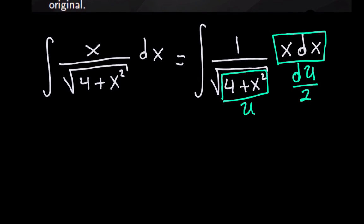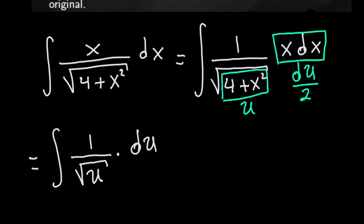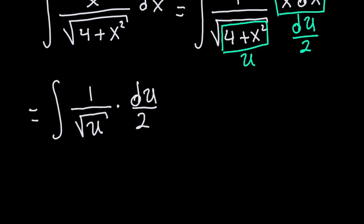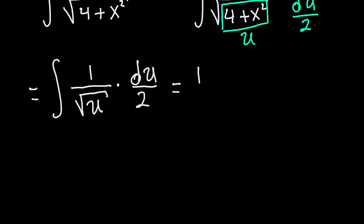So if I make the substitution, that would be the integral of 1 over the square root of u — because that expression is u — times x dx, which is du divided by 2. That should be an easier integral. If it is not easier, that means we failed using substitution. This is actually easier because I can pull the 2 in the denominator out of the integral, giving me one half of the integral of 1 over the square root of u, du.